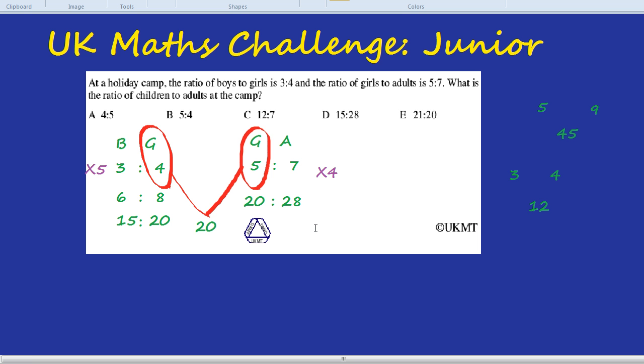Now we can compare boys and girls to adults. Before we had two different kinds of ratios. Now we're all talking about 20 girls. So 20 girls gets you 15 boys and 20 girls gets you 28 adults. So we have, we can write all the ratios in a nice neat pile now if you want.